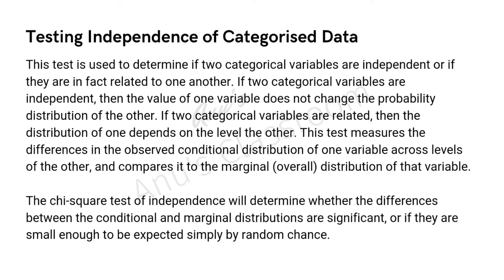The test of independence of categorized data is used to determine if two categorical variables are independent or related to one another. If two categorical variables are independent, the value of one will not change the probability distribution of the other. If they are related, the distribution of one will depend on the level of the other. This chi-squared test of independence measures differences in observed conditional distributions and compares them to marginal distributions, helping determine whether differences are significant or due to random chance.